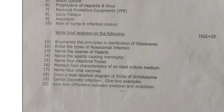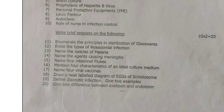The brief answer questions are: 11th — enumerate the principles in sterilization of glasswares; 12th — enlist the types of nosocomial infection; 13th — name the species of malaria; 14th — name the agents causing meningitis; 15th — name four intestinal flukes; 16th — mention four characteristics of an ideal culture medium; 17th — name four viral vaccines; 18th — draw a neat labelled diagram of the egg of Schistosoma; 19th — define zoonotic infection and give two examples.